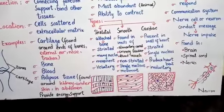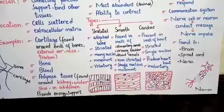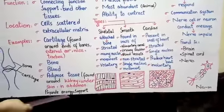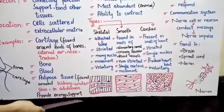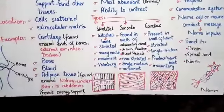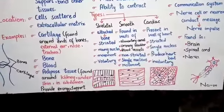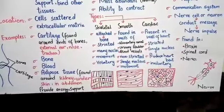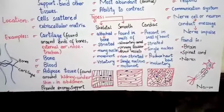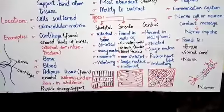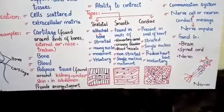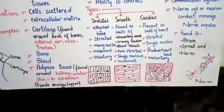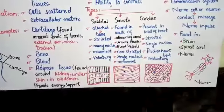Adipose tissue stores fat and provides energy. It also provides support to whatever internal visceral organs are present — they are cushioned by adipose tissue. These tissues provide energy and protect your internal organs. They are stored as fat.